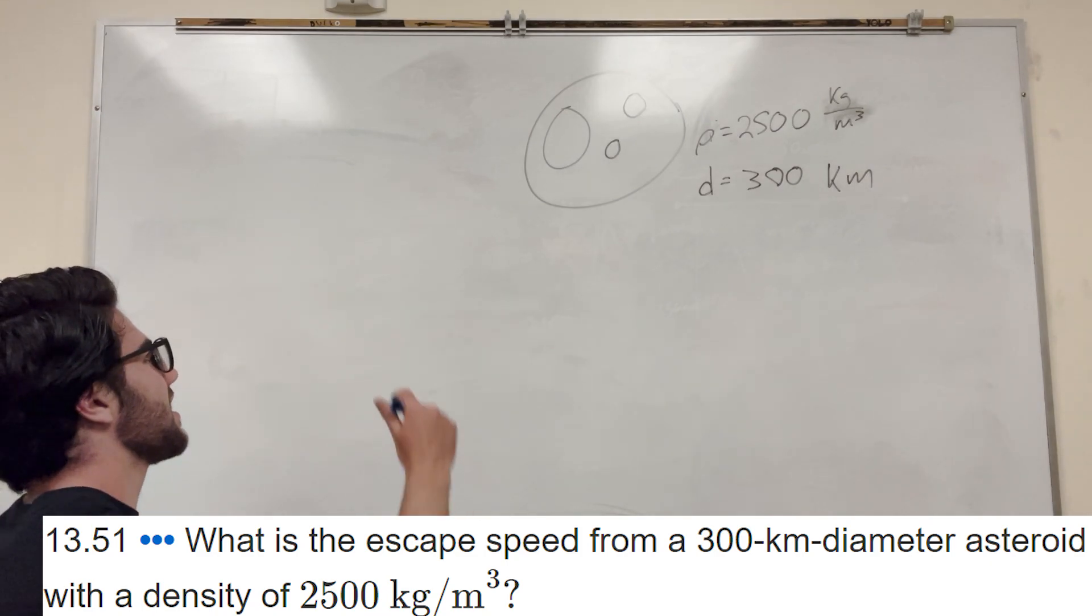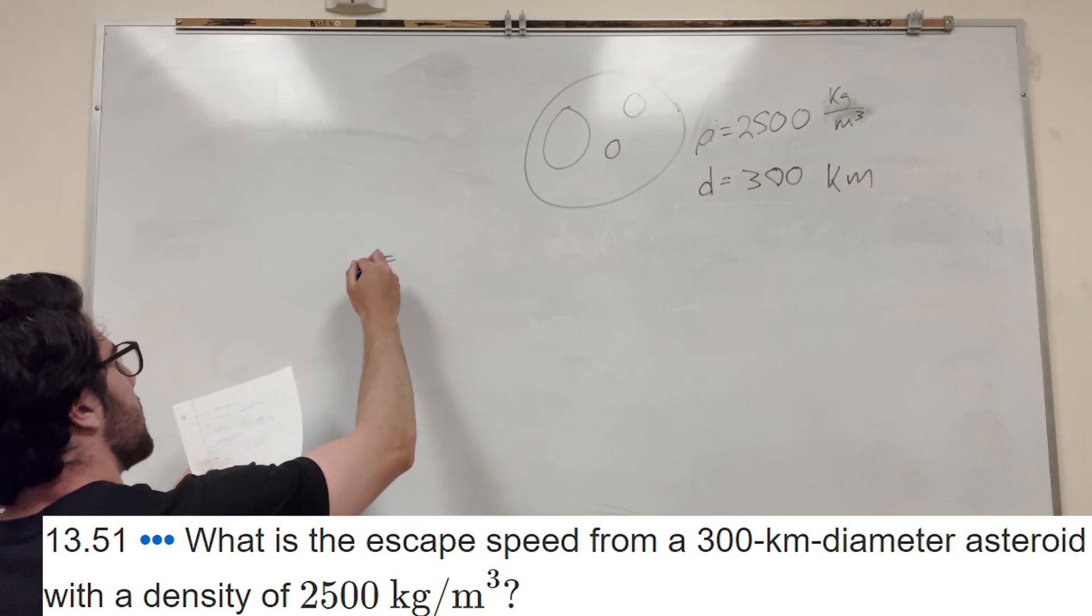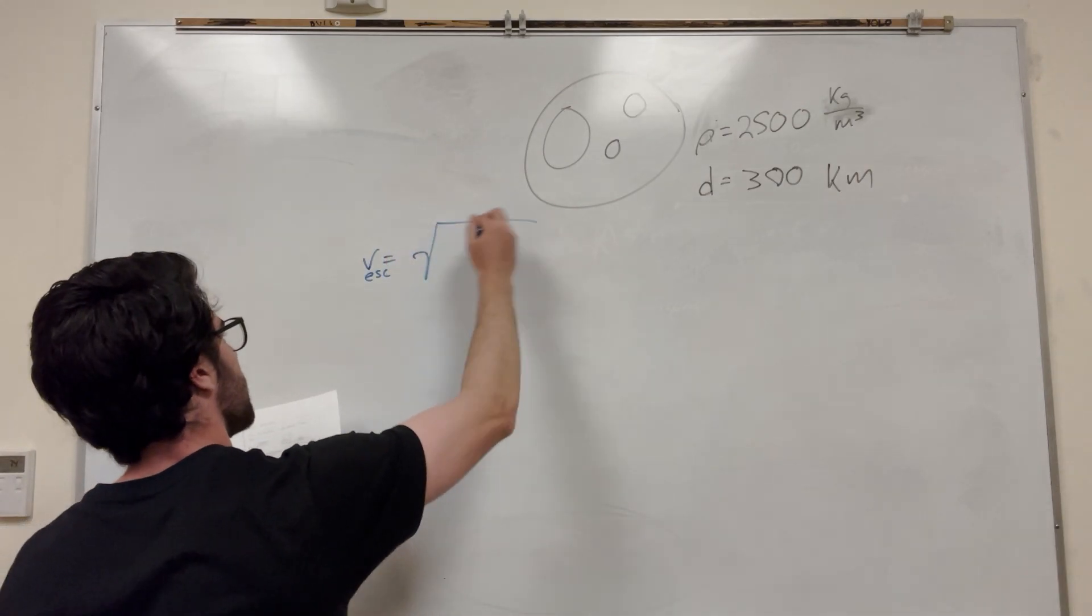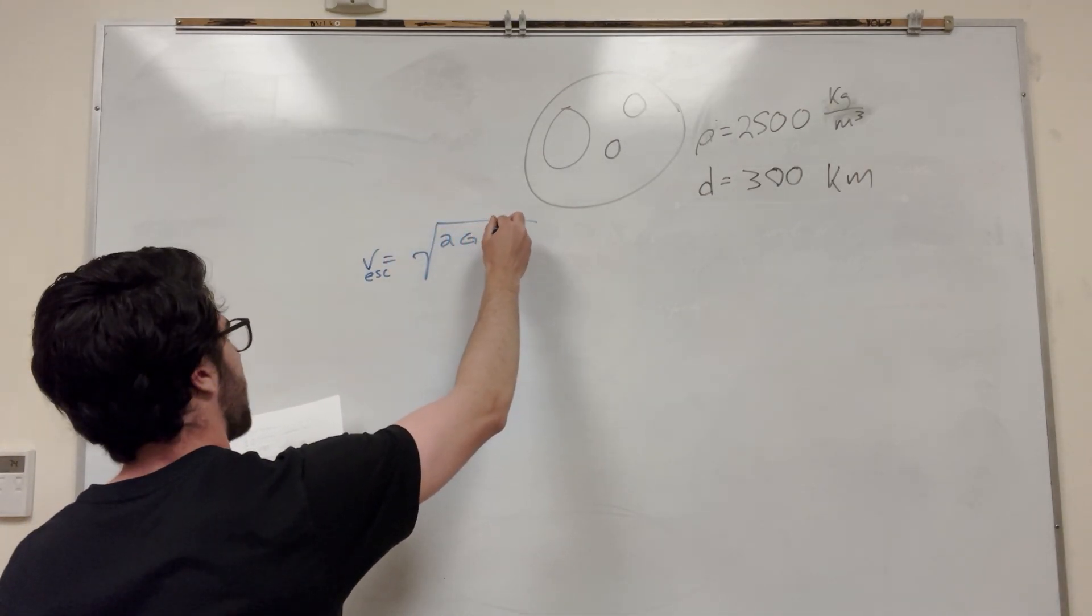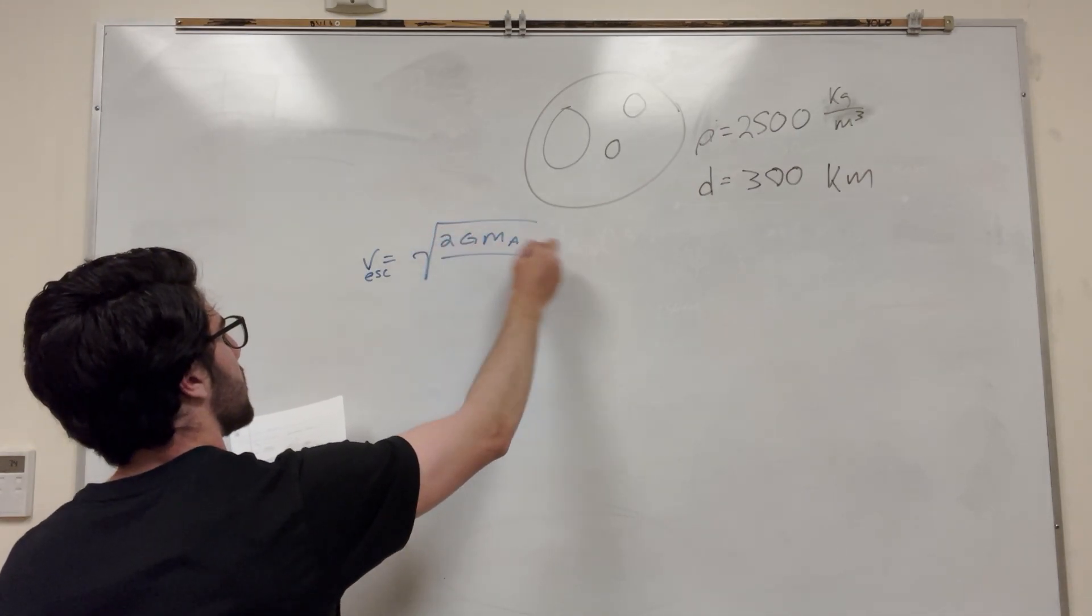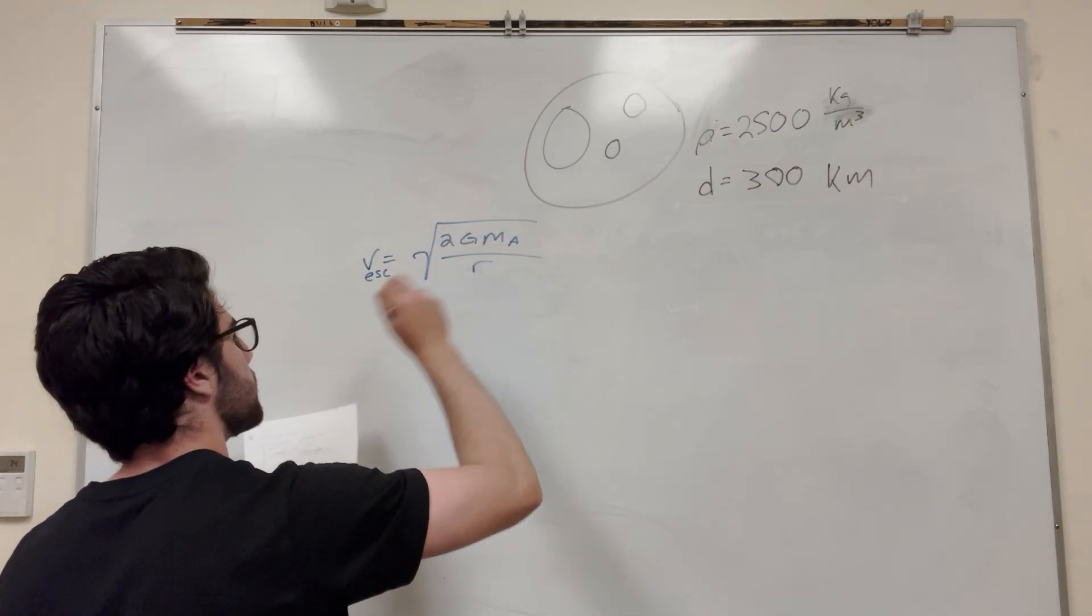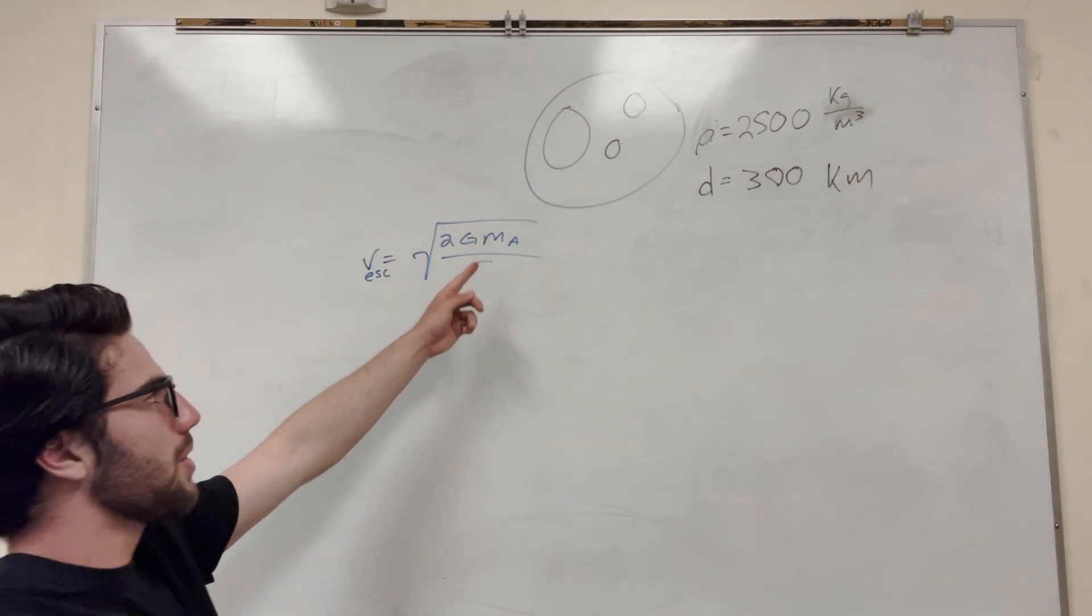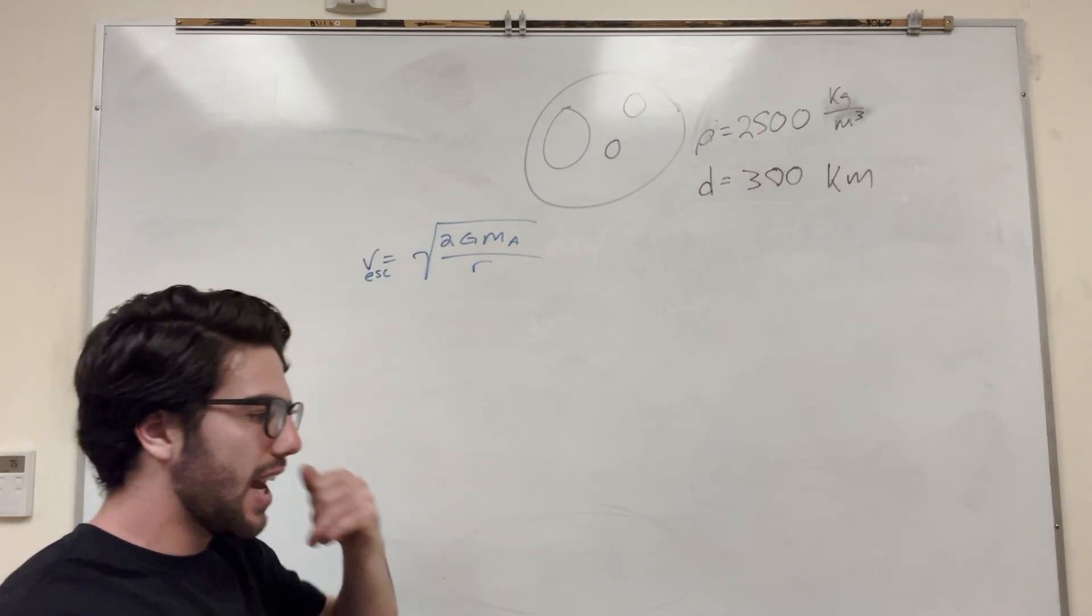So let's get started. We know that our escape speed is equal to the square root of 2 times the gravitational constant times the mass of the asteroid over radius. So the gravitational constant, we know that. The radius, we know that. But we don't know the mass of the asteroid. So that's all we're going to need to find out.